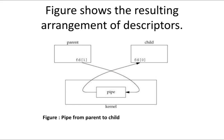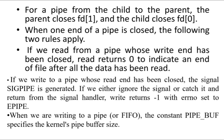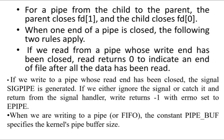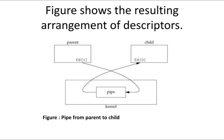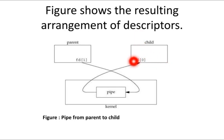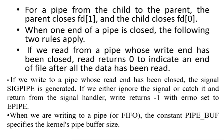For a pipe from child to parent, the process is reversed. The parent closes fd[1] and the child closes fd[0]. This allows information to flow from child to parent.